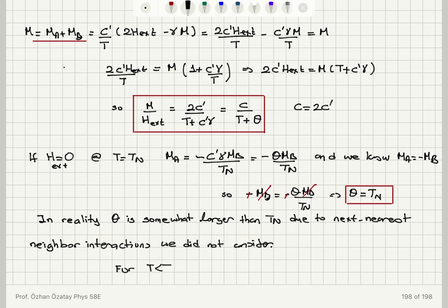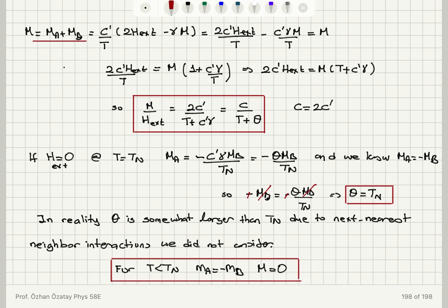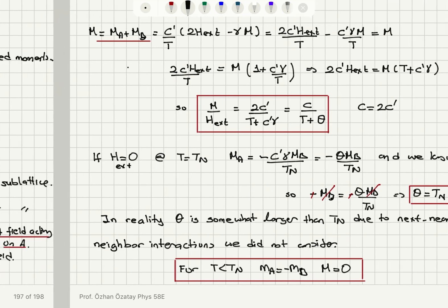For T less than T_N, M_A is always equal to minus M_B, so the net magnetization is zero — that is the property of the antiferromagnet. Strictly speaking, this is true at zero field, and we will talk about how the susceptibility in the antiferromagnetic phase behaves in the next videos.